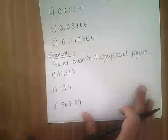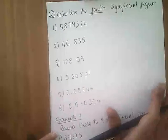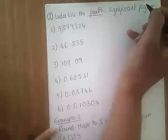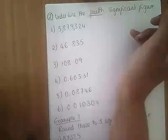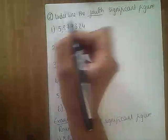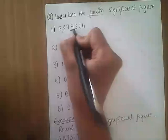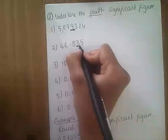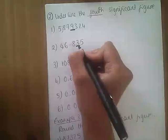Now we're checking we're okay before we start rounding. Here we've got to underline the fourth significant figure. With the number 5,879,324, we want the fourth significant figure. Counting: first, second, third — the fourth significant figure is the nine. For the next number, counting first, second, third — fourth, so 0.83 is the fourth significant figure.